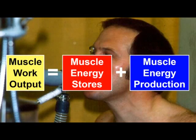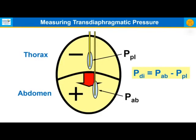Muscle output equals the sum of ventilatory muscle stores and energy production — true for any skeletal muscle. For breathing, because it's a continuous process, we're dealing primarily with energy production. We can measure transdiaphragmatic pressure using an esophageal balloon to measure pleural pressure and an intragastric balloon to measure intra-abdominal pressure. Transdiaphragmatic pressure, or the function of the diaphragm, is abdominal minus pleural pressure.